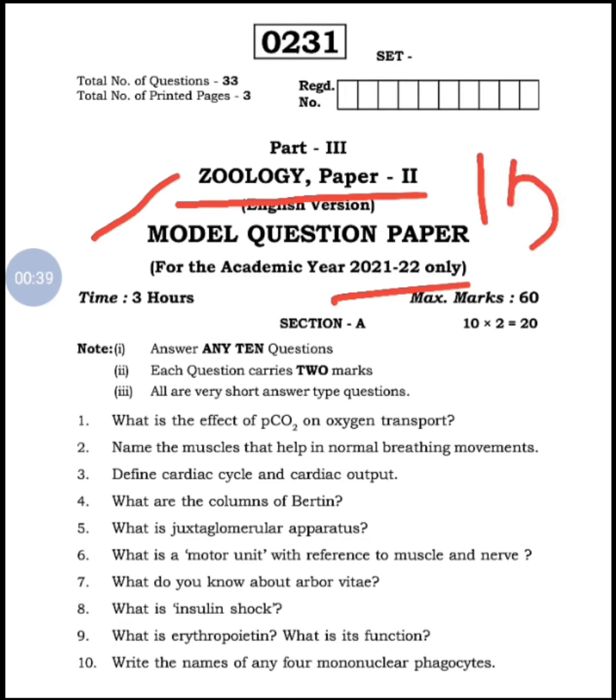This year, students are going to have 15 very short questions. You should attempt only 10 from this. As usual, even in the different sections they are having extra choices. Let's see section-wise, and finally I'll give you a detailed account and clarity regarding very short answers, short answers, and long answers, their respective chapters and number of questions.